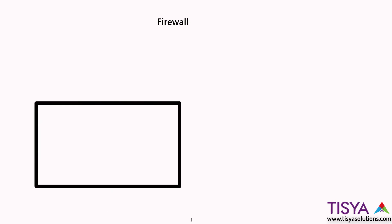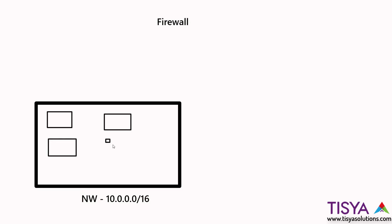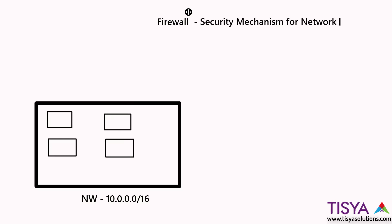Assuming this is a network that I have got and its CIDR is 10.0.0.0/16, I might have various computers within this network, which I will put as these smaller rectangles. Typically, when I have a network, I want to protect it. The idea behind firewall is basically a security mechanism to protect your network — so firewall is a security mechanism for network traffic.